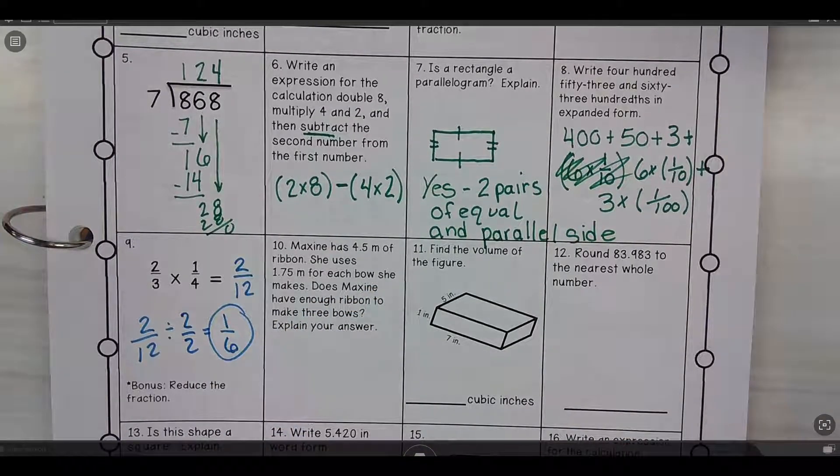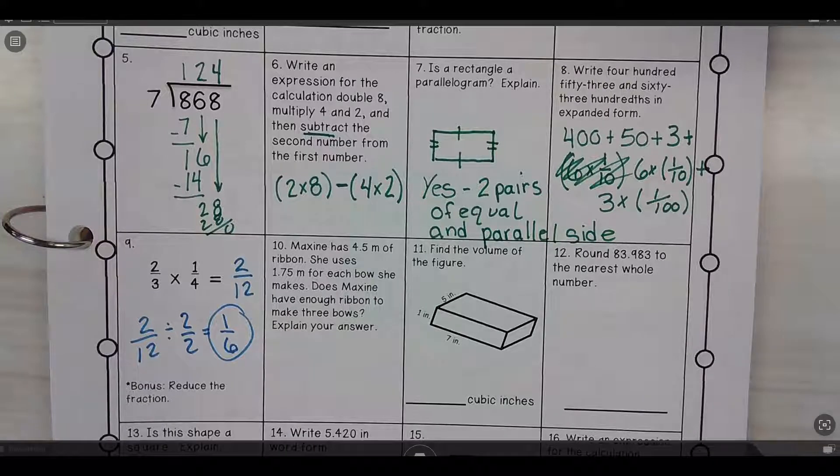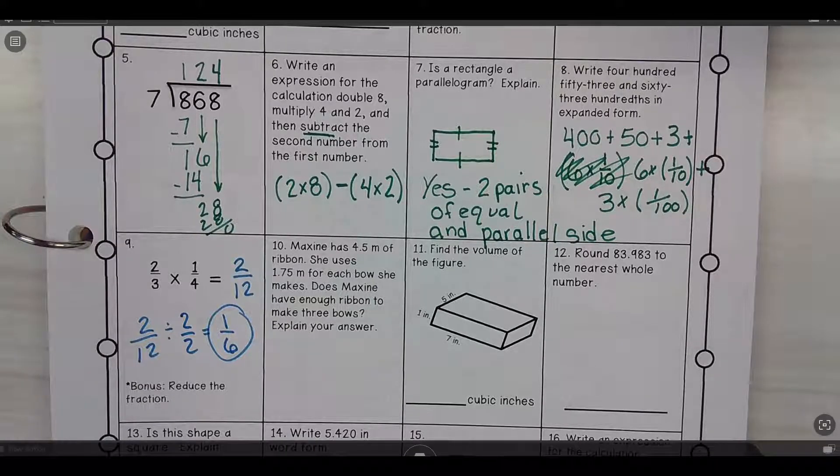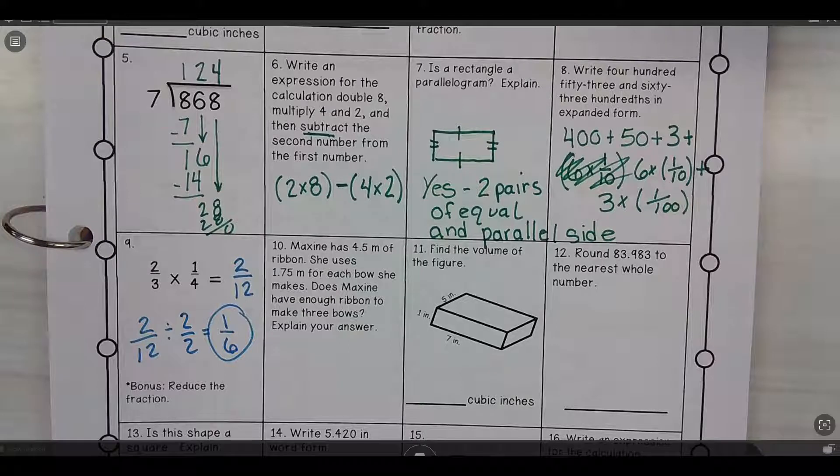Maxine has 4.5 meters of ribbon. She uses 1.75 meters for each bow she makes. Does Maxine have enough ribbon to make three bows? Explain your answer.